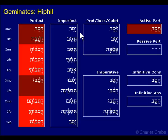In the Qal and the Hiphil you have qamets here, and in the Niphal the qamets is over here. You can compare your tables again if you aren't sure on that, but the nice thing is that hollows and geminates have the same pattern for the prefix vowels in the Niphal and the Hiphil.